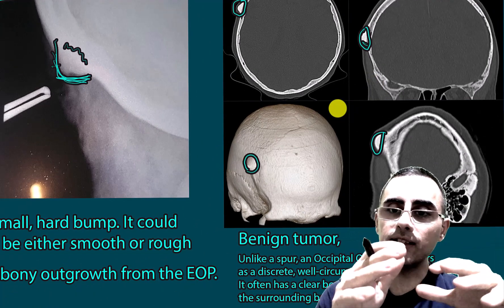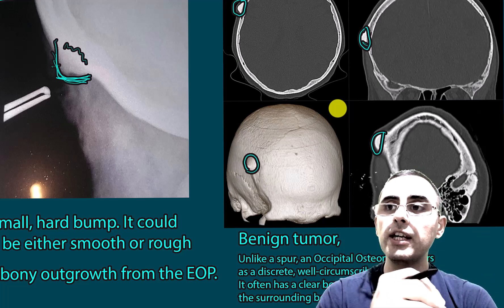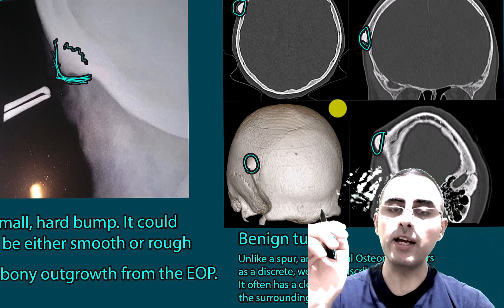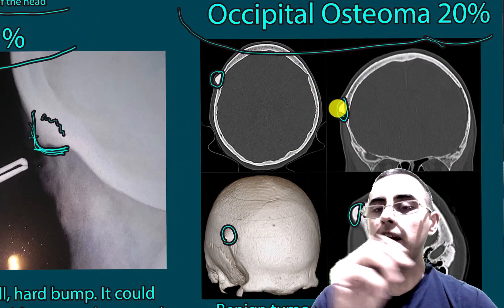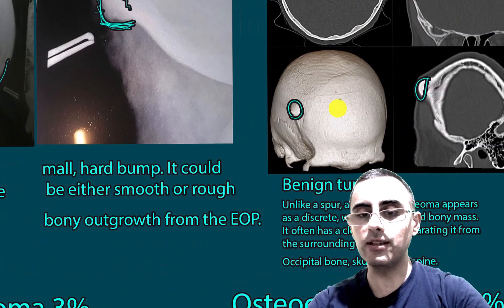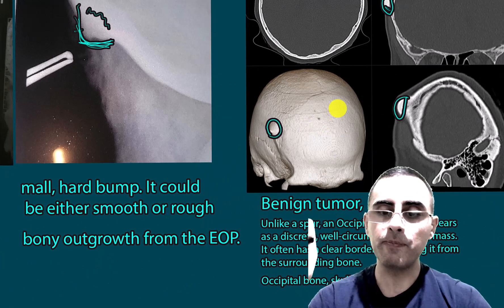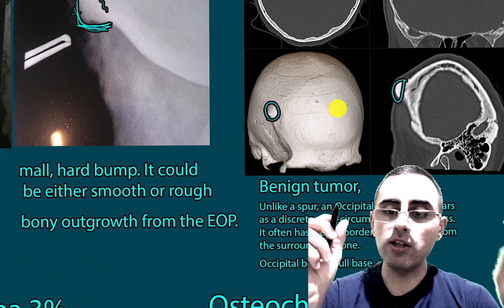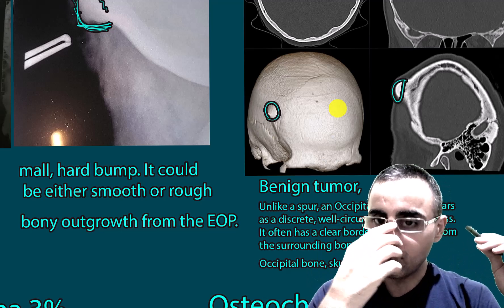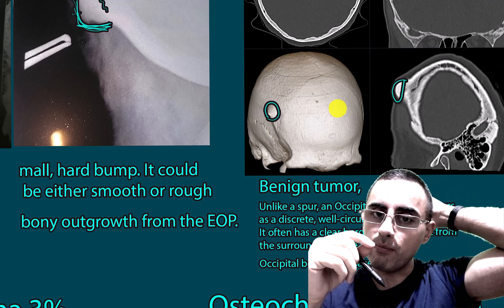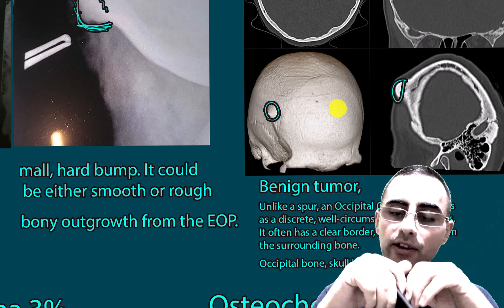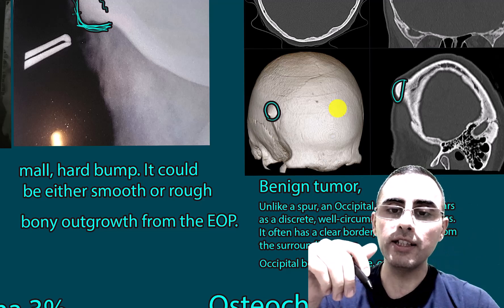Occipital osteoma is a benign tumor — it is not malignant and has a good prognosis. In most cases no treatment is needed, and a person can live their whole life with it asymptomatically. If it becomes large enough to cause pain or discomfort, surgical removal is an option. Osteoma can also develop in other parts of the body such as the skull, spine, and other bones.